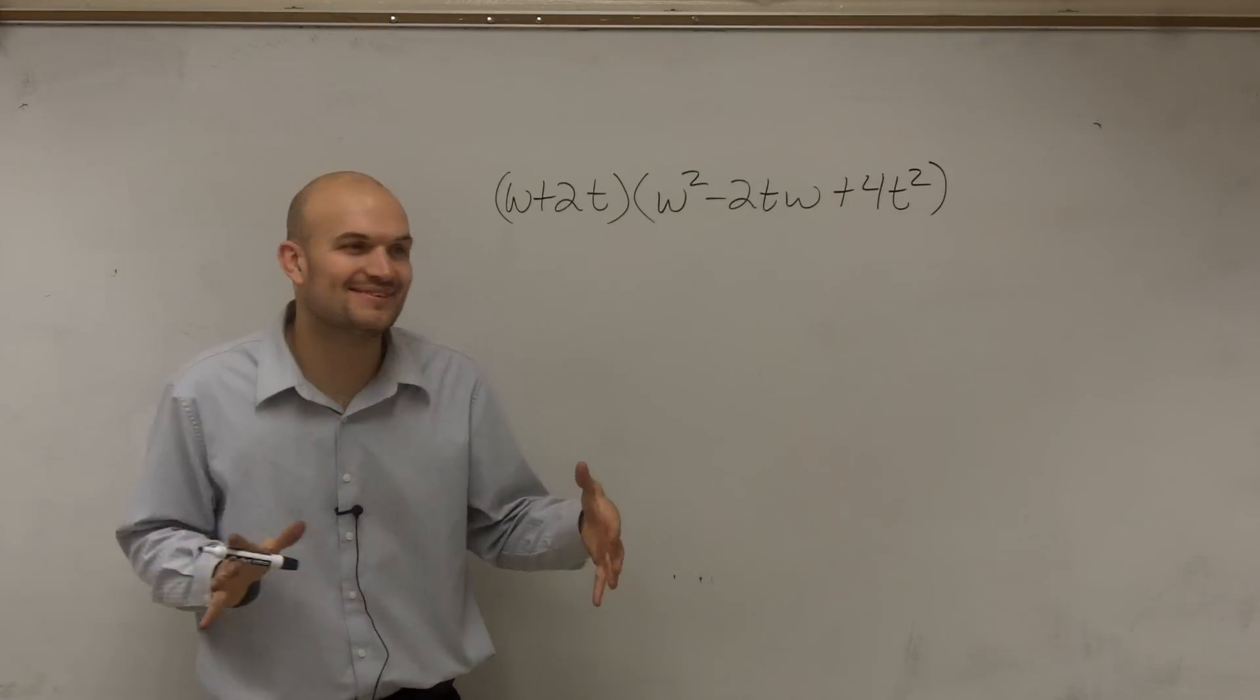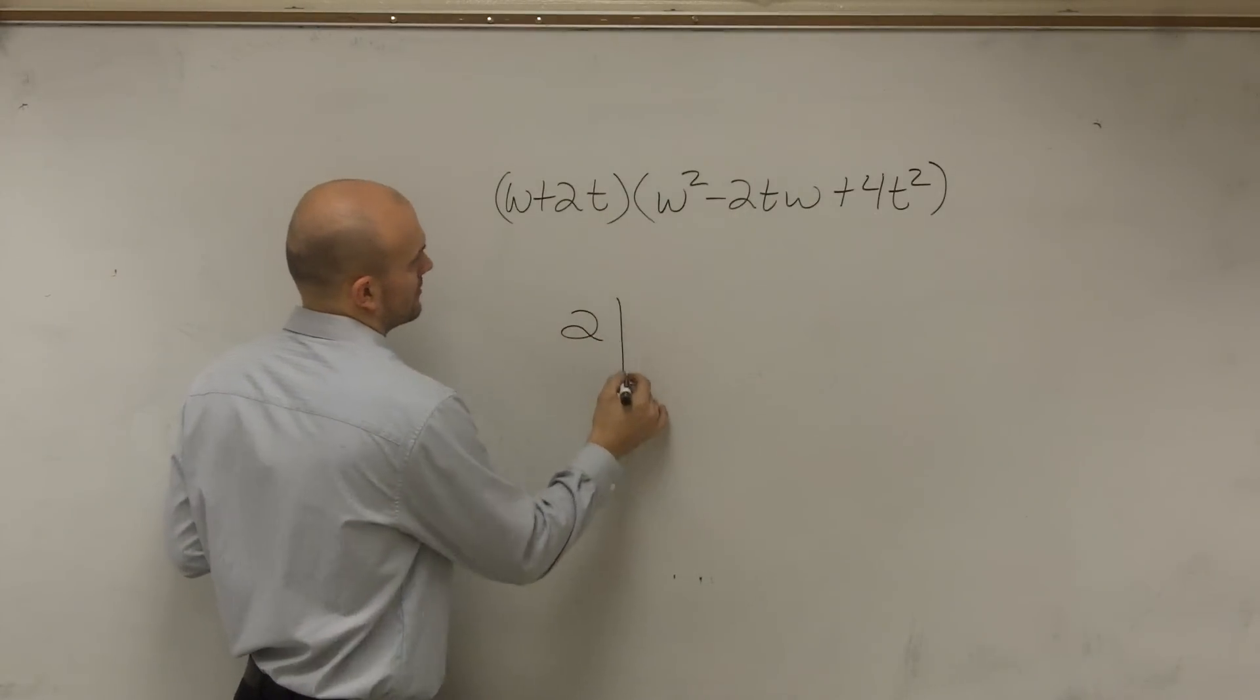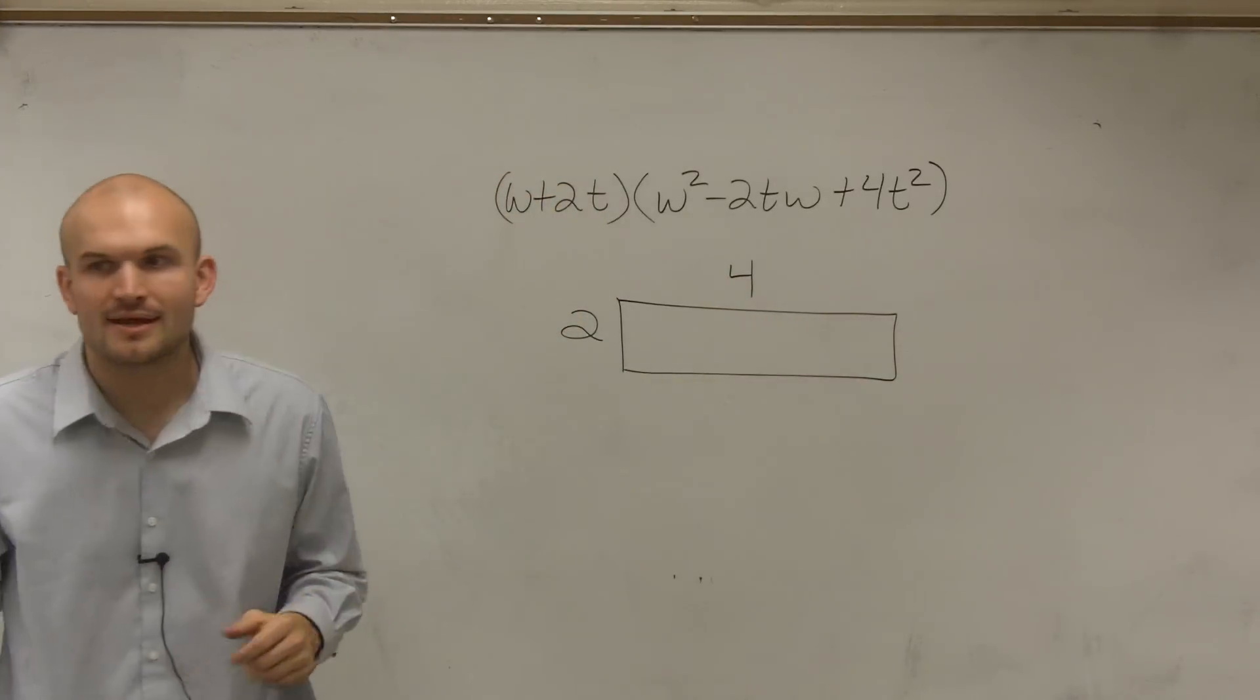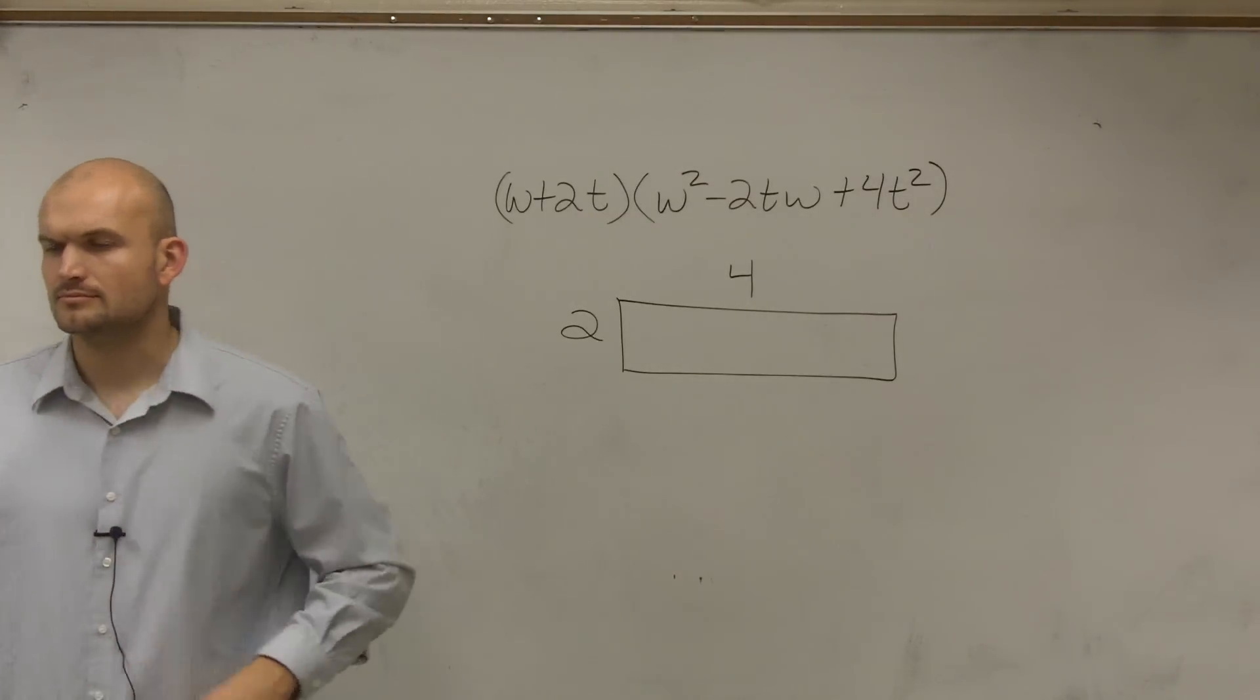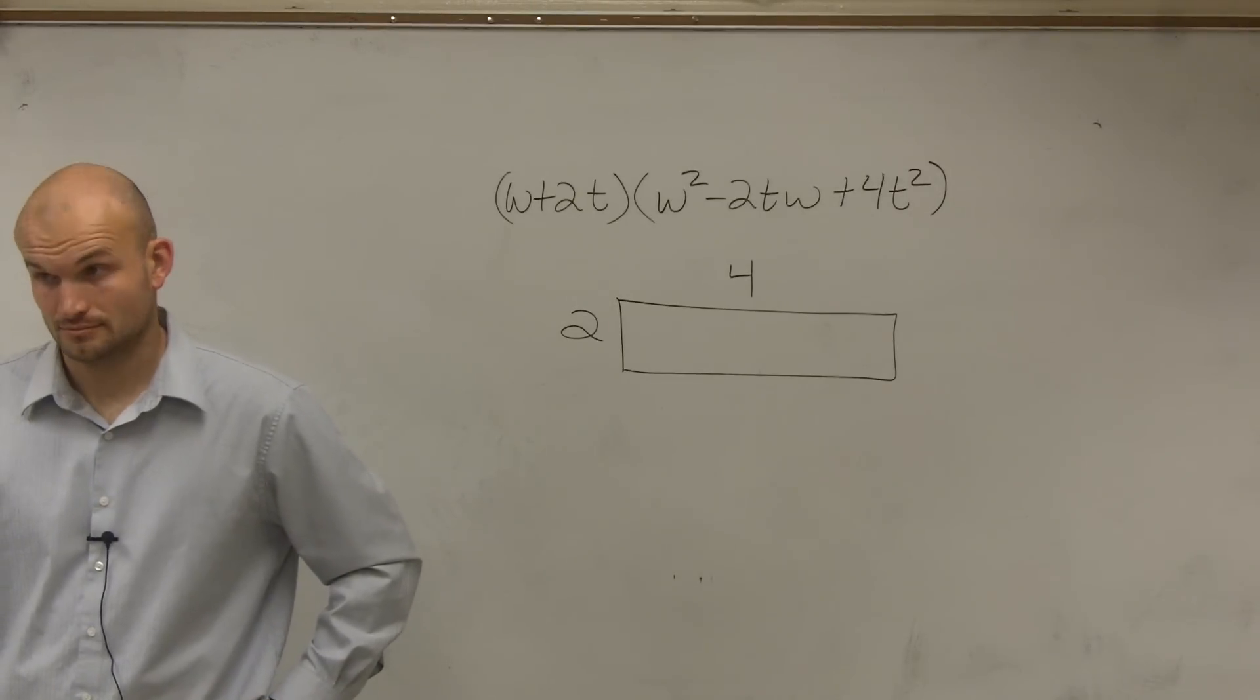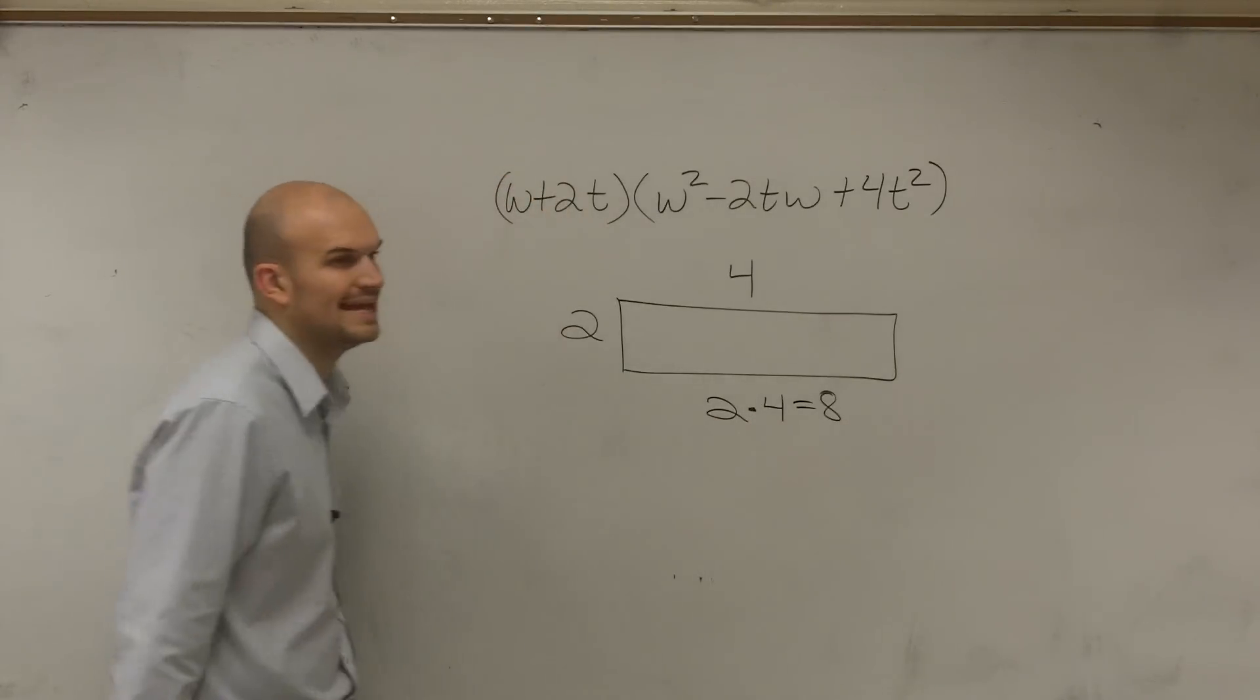So when you want to find the area of a bulletin board, let's pretend I have an area of a bulletin board which is 2 by 4. If I wanted to find the area of a bulletin board, if I said it's 2 by 4, then you would just simply multiply 2 times 4, and you know the answer would be 8.